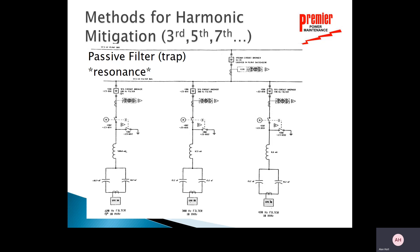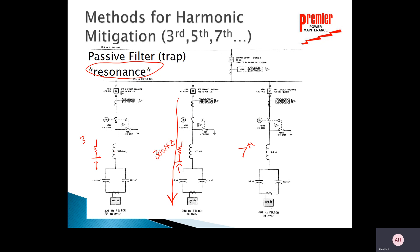Another method is harmonic trap filters — series LC circuits tuned to specific harmonic frequencies. One inductor-capacitor series circuit is tuned to 300 Hz (fifth harmonic), so fifth-harmonic current finds near-zero impedance there and diverts to ground rather than propagating through the system. Similarly, separate traps are tuned for the seventh and third harmonics, filtering those currents directly to ground and keeping them off the utility grid.